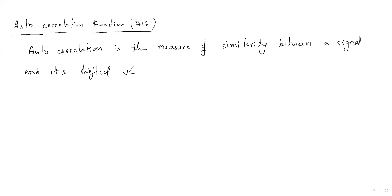If both signals are exactly the same with no time shift, then directly the correlation gives the maximum value of 1. The formula for autocorrelation differs for energy signals and power signals. Let me give the formula of autocorrelation for an energy signal.